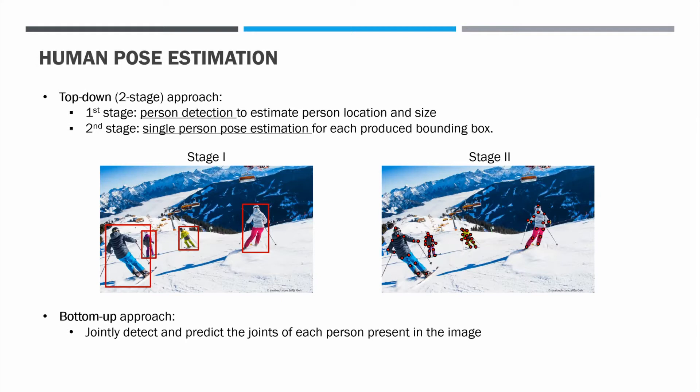While initially the latter was performing better for cases where multiple persons overlap, recent advances in object localization have largely swung the lead in the other direction. Our method is part of the top-down methods family.